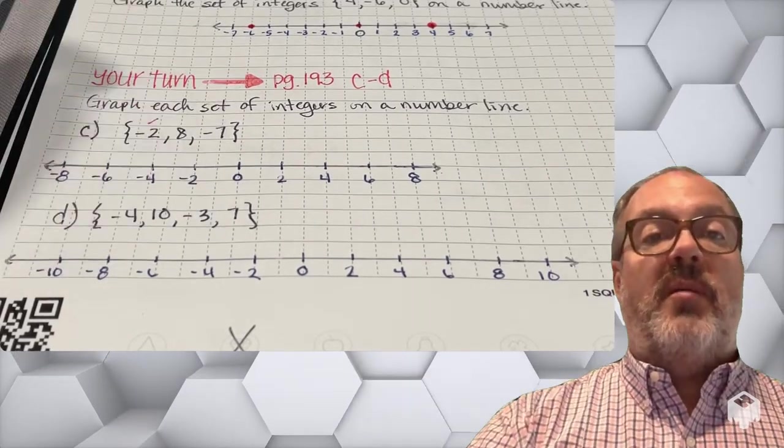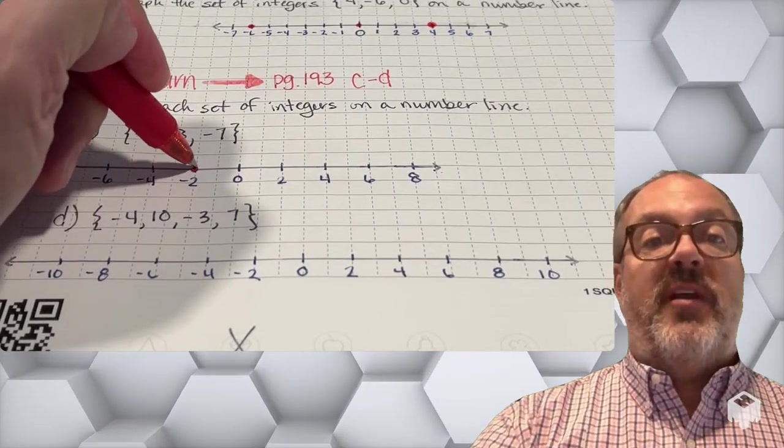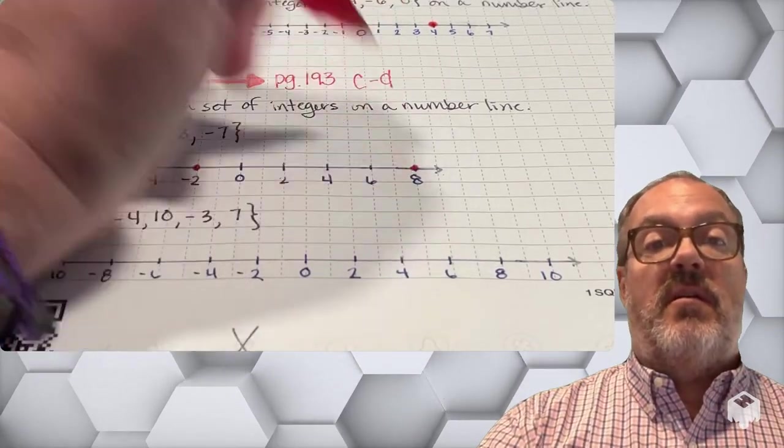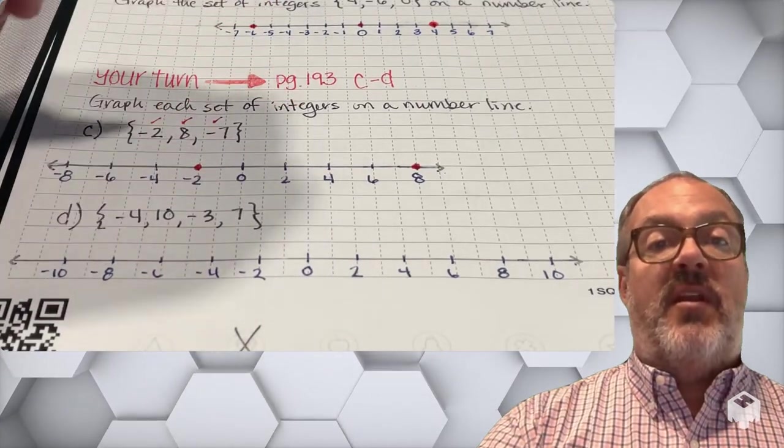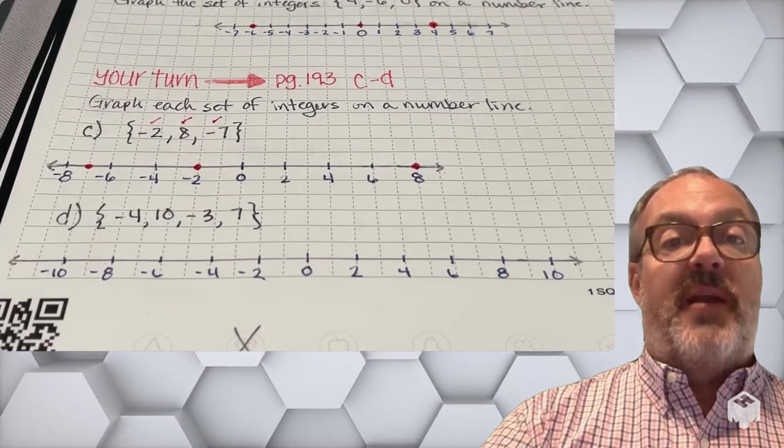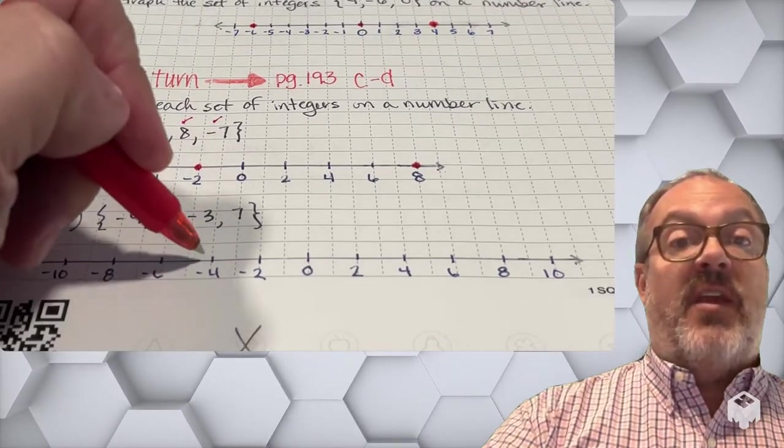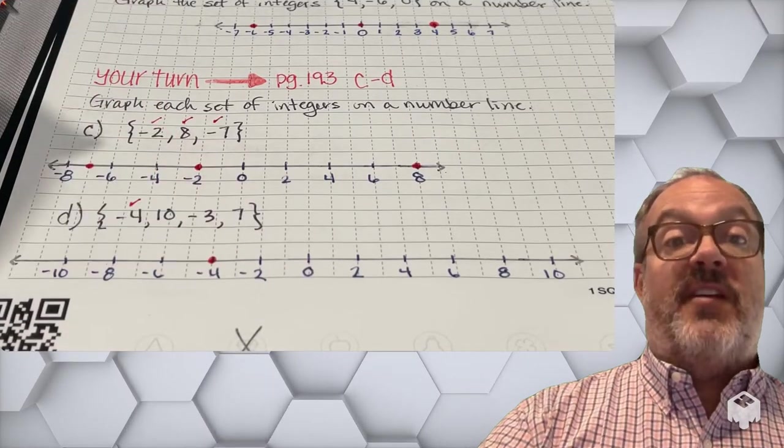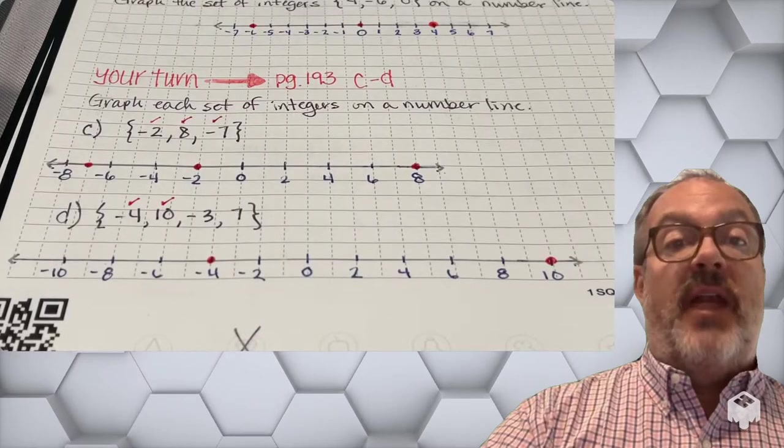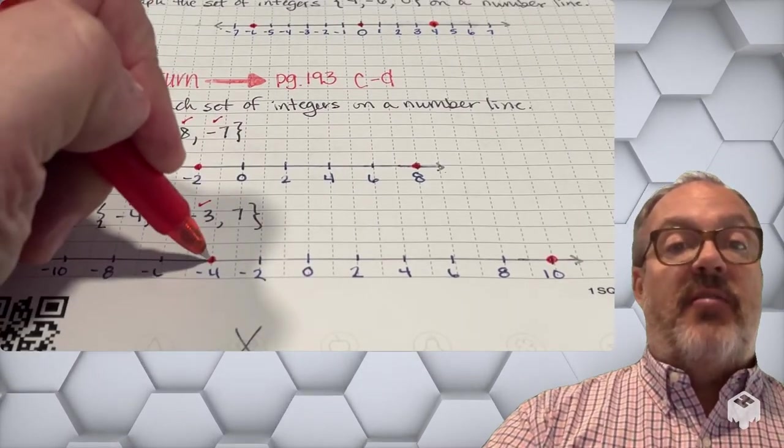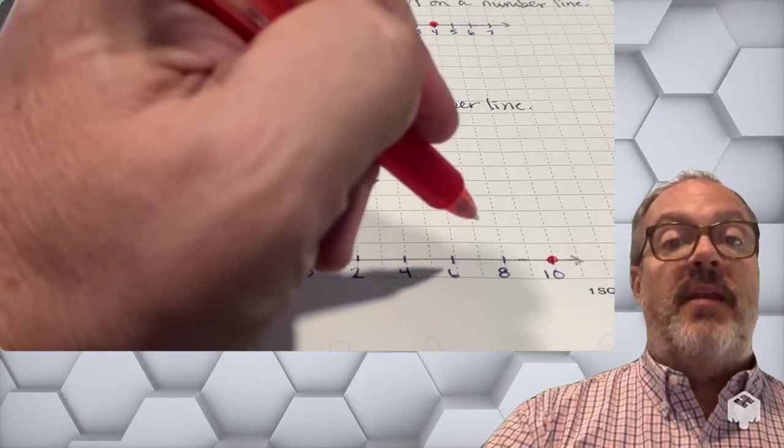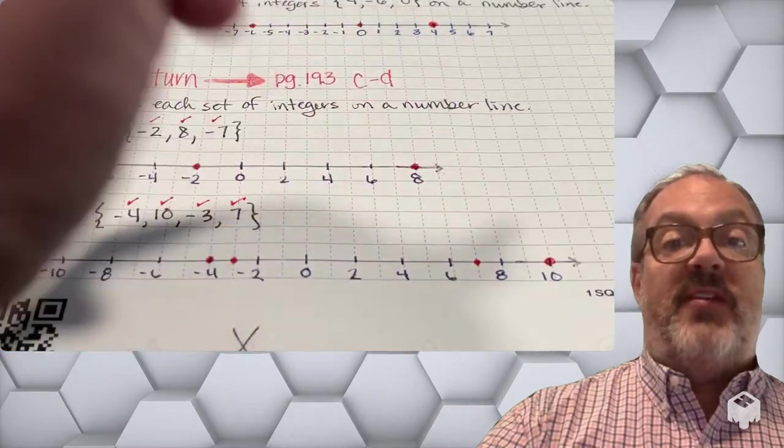All right, in problem C, I'm going to put a dot at negative 2, a dot at 8, and a dot at negative 7. And now I have graphed those set of integers on the number line. Now notice, I had to think about what was between 6 and 8. In D, I'm going to graph negative 4 and positive 10. Negative 3, well, that's going to be between negative 2 and negative 4. And positive 7 will be between 6 and 8.